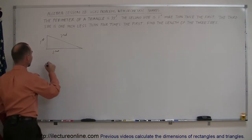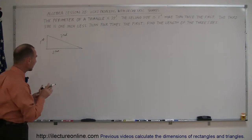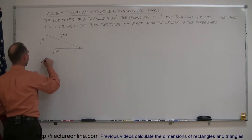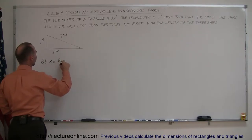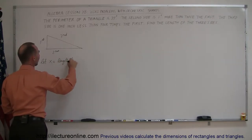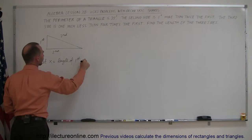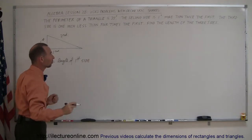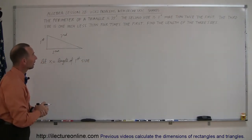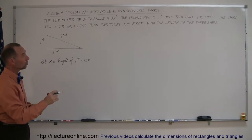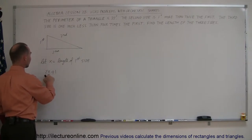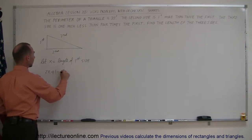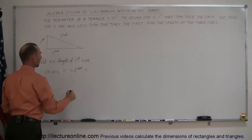Let's start off by assuming that the first is the smallest one — that seems to be the indication here. So let x equal the length of the first side. The second side is one inch more than twice the first, so that's 2x plus 1, which equals the length of the second side.